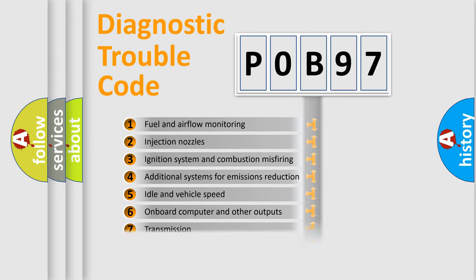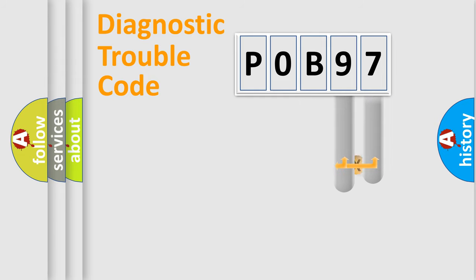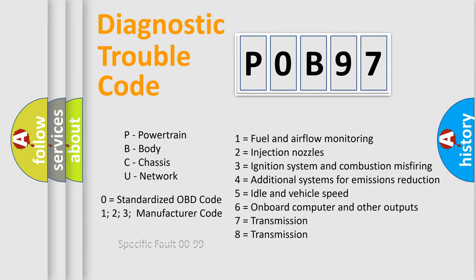The distribution shown is valid only for the standardized DTC code. Only the last two characters define the specific fault of the group. Let's not forget that such a division is valid only if the second character code is expressed by the number zero.